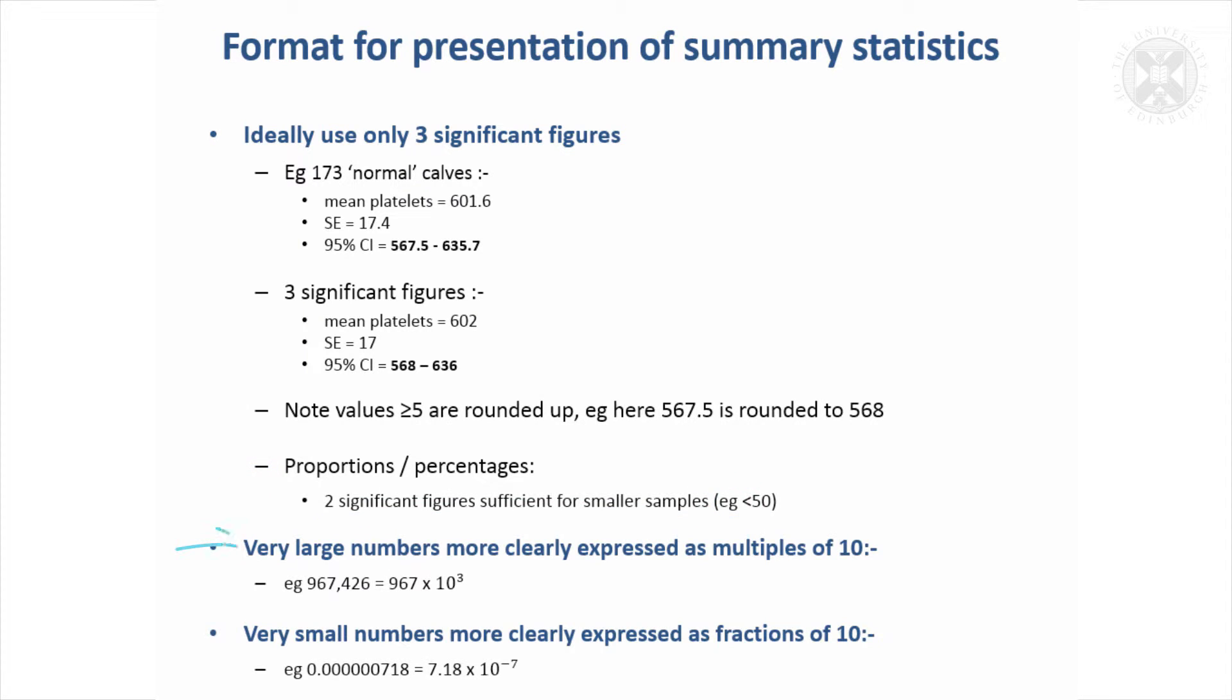And if you've got very large summary statistics, it's a good idea not to present all the figures. You can present them as multiples of 10 to a particular power. And the similar thing for very small numbers, rather than give loads of decimal zeros after the decimal point, if you present it as a number multiplied by 10 to the minus a power, here it's 10 to the minus seven. And that's more neater and more easy to understand.